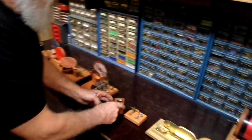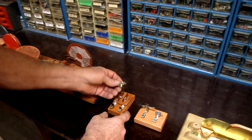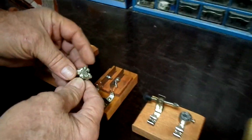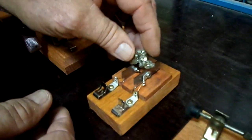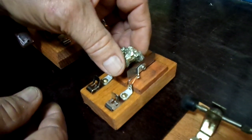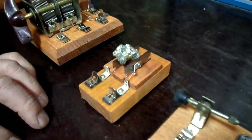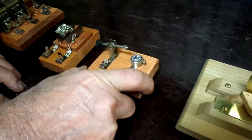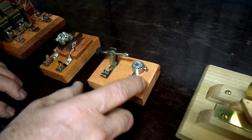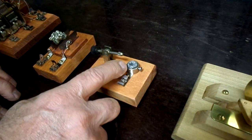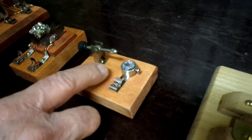This is a little detector. It uses a couple of razor blades and a piece of iron pyrite. If you set that on there and find the right spot, it'll work as a diode detector. This is, of course, a crystal, a homemade knockdown crystal stand with galena and a cat's whisker.